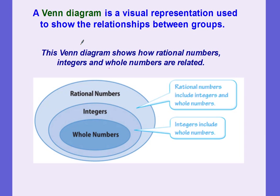A Venn diagram is a visual representation to show the relationships between different groups — in this case, the different classifications of numbers. Here is a Venn diagram showing whole numbers, with the whole number circle inside integers, because integers also include whole numbers. Then both whole numbers and integers are inside rational numbers, because rational numbers include integers and whole numbers.